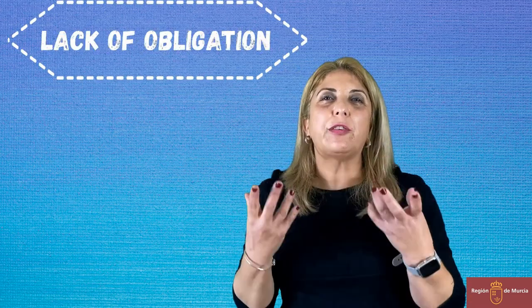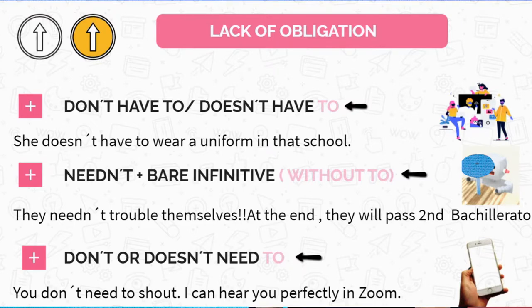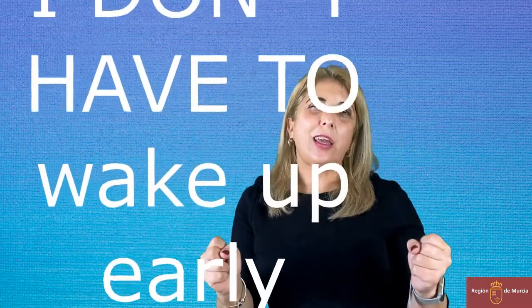Now that we know how to express obligation, let's move on to how to express lack of obligation. We have a few modal verbs you can use: definitely the most common one is 'don't have to' or 'doesn't have to', but as you can see in the diagram, you can also use 'needn't' and 'don't need to'. We use 'don't have to' or 'doesn't have to' to express that something is not necessary. Imagine a Saturday night and you say 'I don't have to wake up early tomorrow morning' — and you feel happy about that. So it's a lack of obligation.